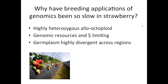Applications of genomics have been pretty slow in strawberry breeding up until now. The primary reason is that the cultivated strawberry is a highly heterozygous allo-octoploid, so its genetics are quite complicated. Figuring out how to do mapping and genetic studies in that octoploid is quite daunting. In addition, because of the difficult genetic complexities of cultivated strawberry, genomic resources have been limiting, and money has been limiting in a specialty crop such as strawberry. Germplasm in strawberry is also pretty highly divergent across regions.